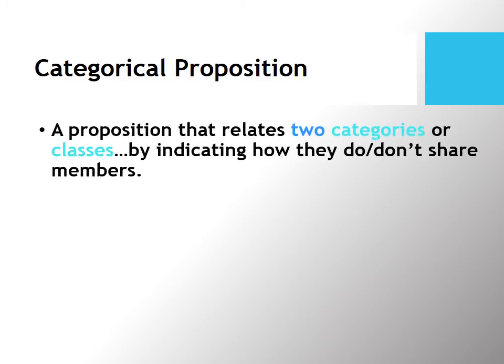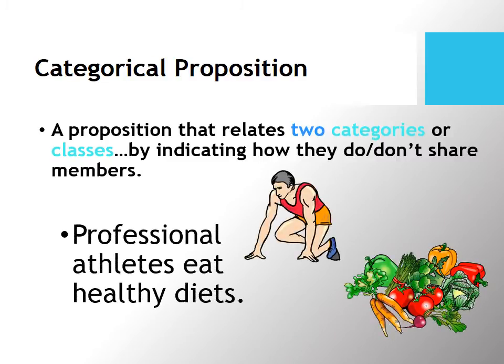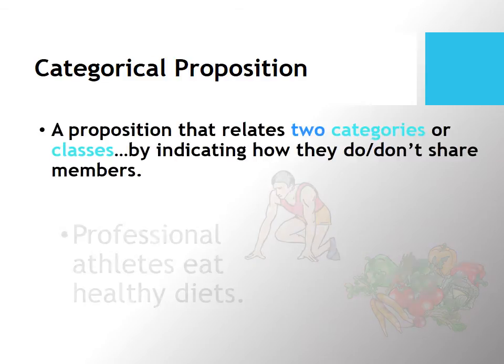A categorical proposition is a proposition that relates to categories or classes, indicating how they do or don't share members. For example, if somebody says 'professional athletes eat healthy diets,' there are two classes involved: professional athletes and those who eat healthy diets. I'll return to this example later.